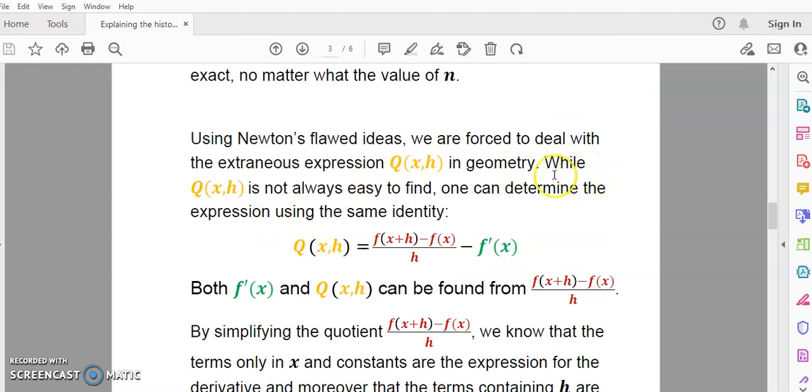Using Newton's flawed ideas we are forced to deal with this extraneous expression which in the case of the cubic function is 3xh plus h squared.